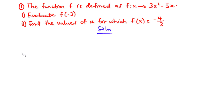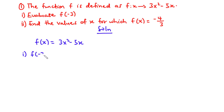Let's try this question together. We have the function f(x) = 3x squared minus 5x. We are going to evaluate f of negative 3. f of negative 3 means we are going to substitute negative 3 in place of x in this function, so we have 3 times negative 3 squared.